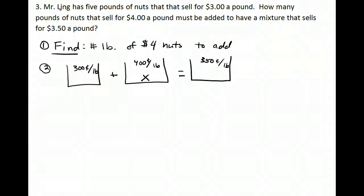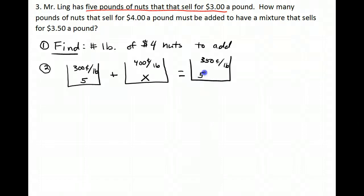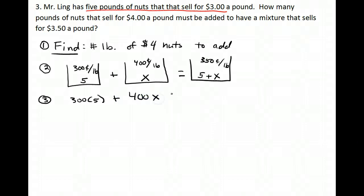I know there are 5 pounds of the 300-cent nuts, so that bottom is 5. Looking at the bottom of the buckets: 5 plus X gives the total amount of the mix, so the mix bucket bottom is (5 + X). The equation, multiplying the buckets, is: 300(5) + 400(X) = 350(5 + X).